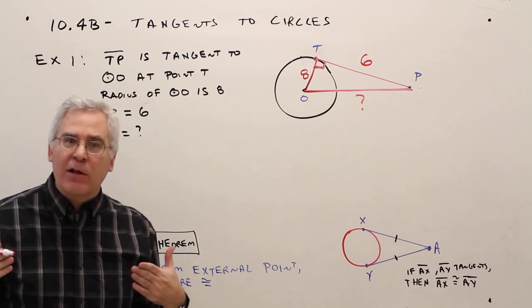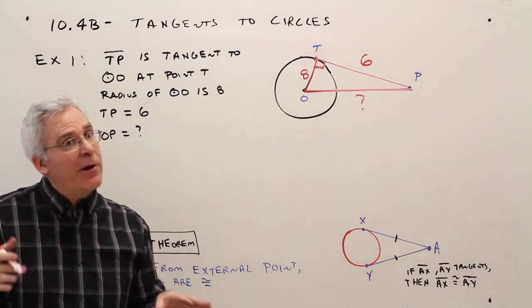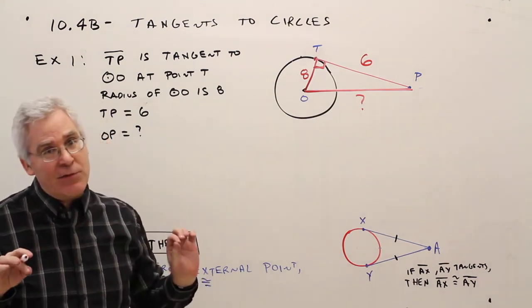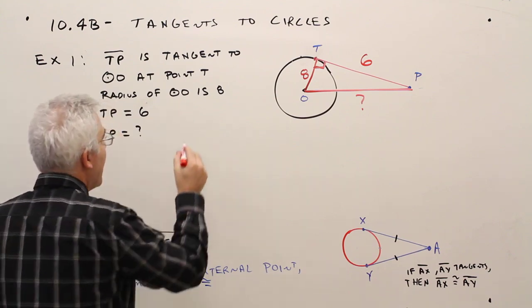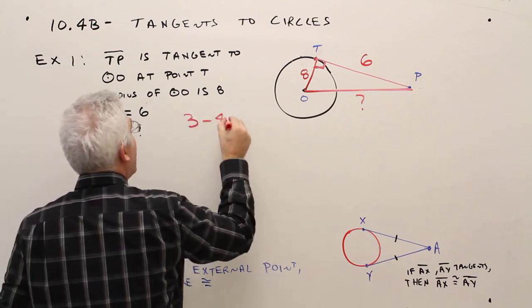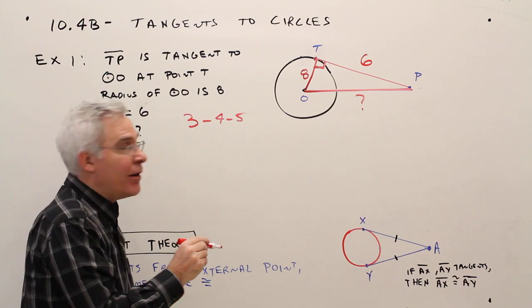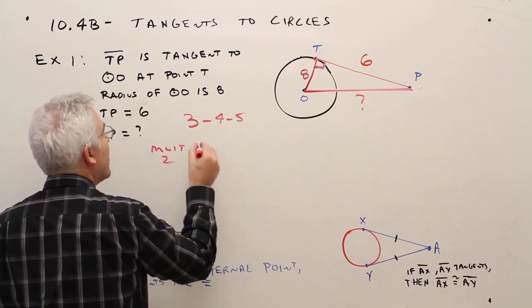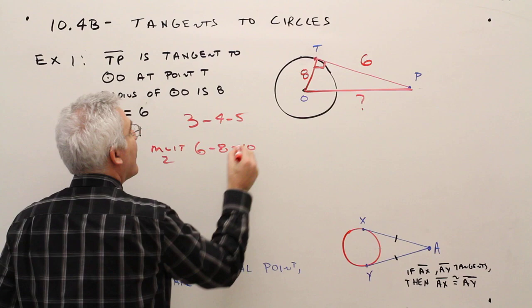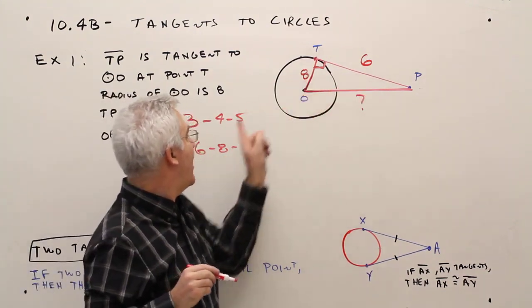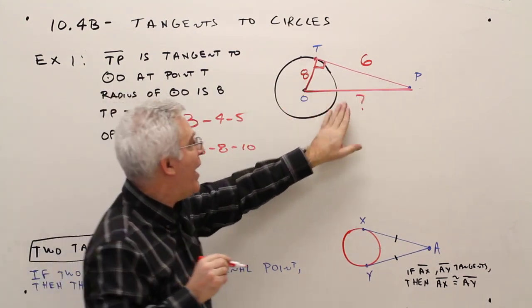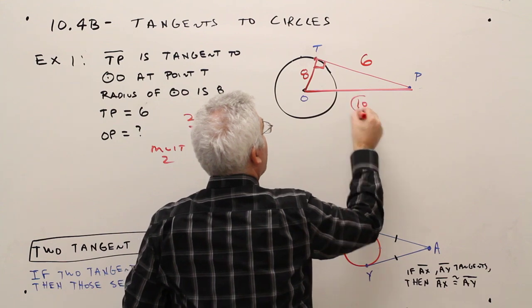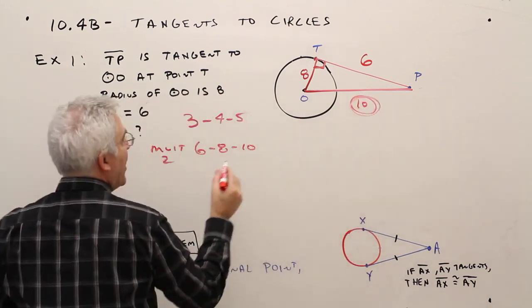I've got a right triangle. I could use the Pythagorean Theorem, but when you see these numbers, please save time and think of a 3, 4, 5 right triangle, or multiplying it by 2, a 6, 8, 10. 6 and 8 are the legs, so 10 is the hypotenuse, if it makes sense. So the answer is OP equals 10.